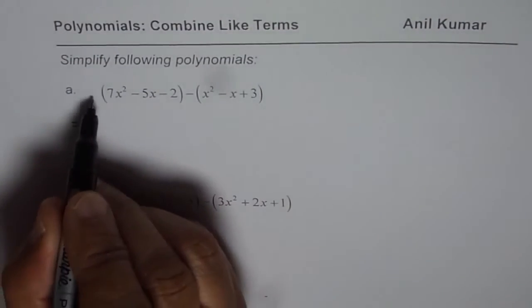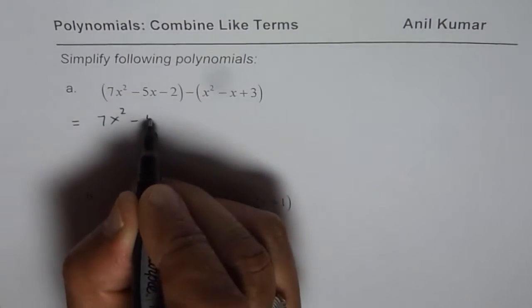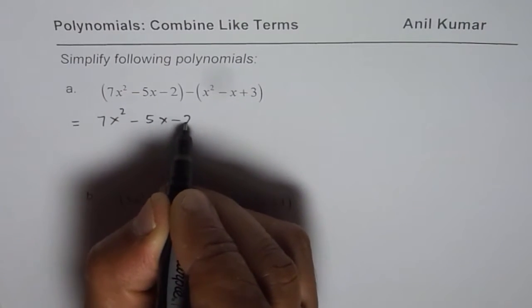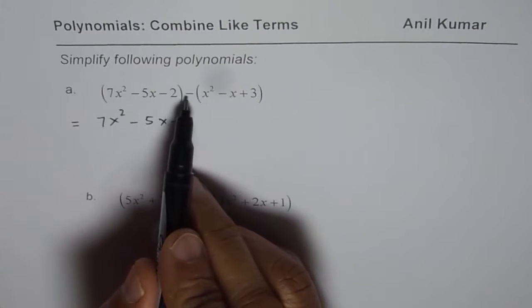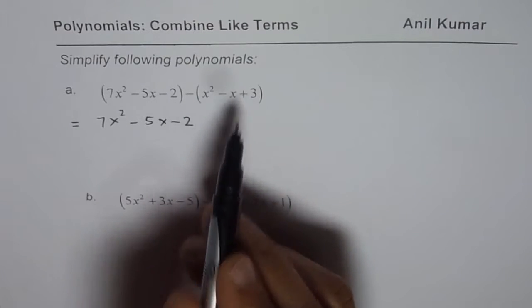So in the first case this is positive. All terms remain exactly same. 7x squared minus 5x minus 2. Here since it is minus all the terms inside the brackets will have reverse signs.